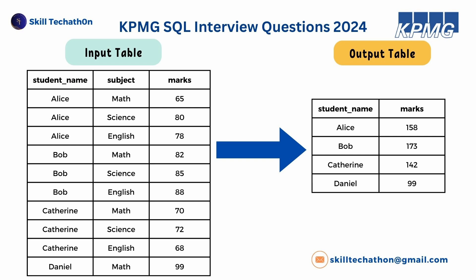We have been given an input table with student name, subject, and marks. In the output we need to find out student name and marks. In the input table we have students with different subjects — Alice, Bob, and Catherine each have 3 subjects: Math, Science, and English. Daniel has only Math. We need to find the top 2 subjects with the highest marks and the total of those marks per student.